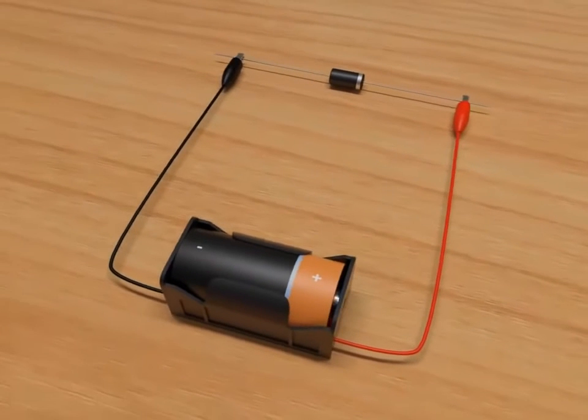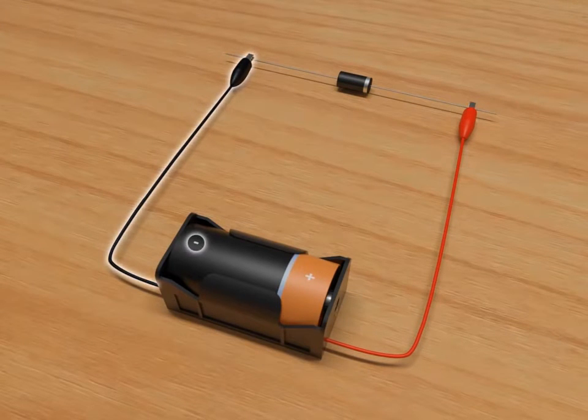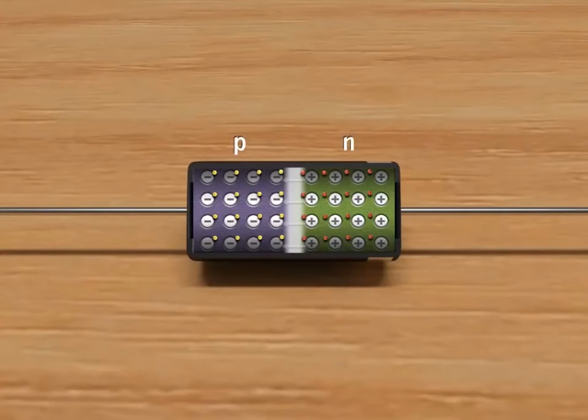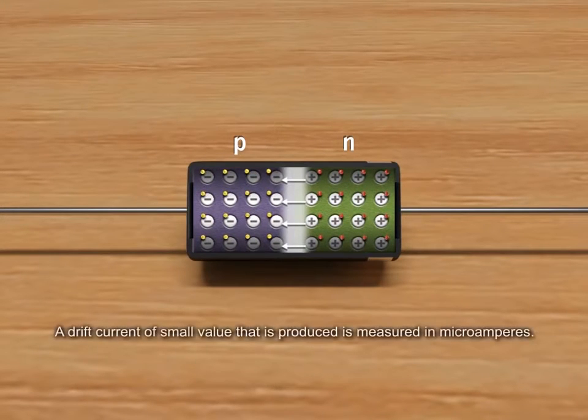In a reverse bias, when a cell is connected across the diode, the N-side of the semiconductor is connected to the positive of the cell and the P-side is connected to the negative of the cell. Then, the thickness of the depletion layer increases. The diffusion current reduces enormously, but some of the holes on the P-side and the electrons on the N-side come close to the junction and are swept to its majority zone. This is called drifting of charge carriers. Thus, a drift current of small value is produced and is measured in microamperes.